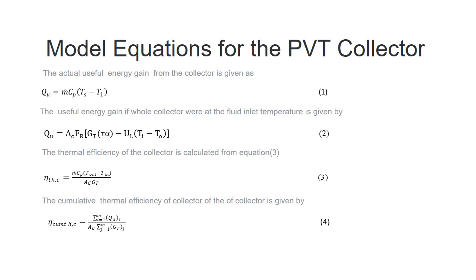These are the equations that we use. We have the useful heat gain from the collector as the product of mass flow rate, temperature change, and the heat capacity.